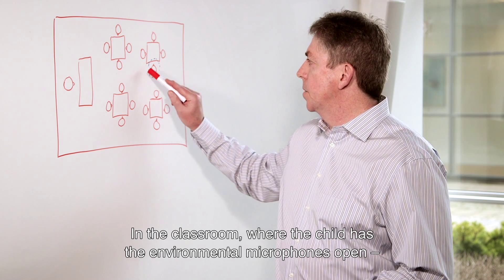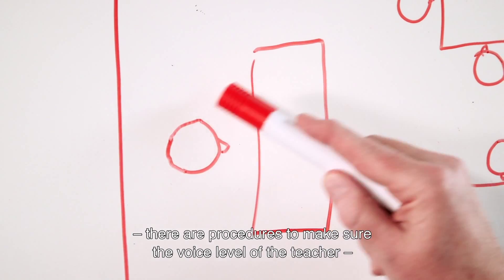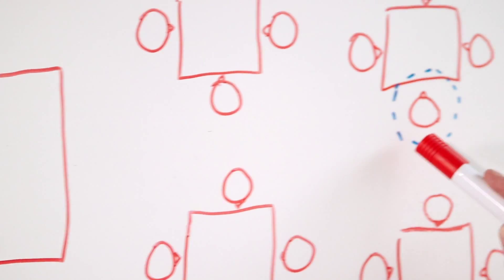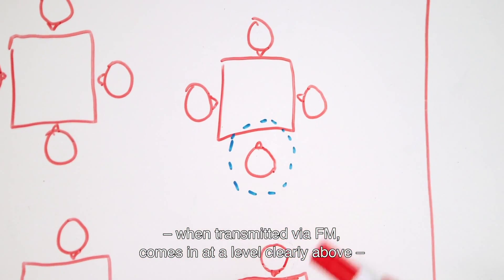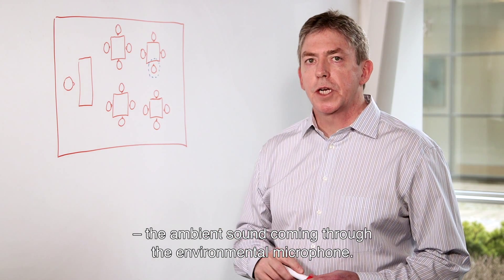In the classroom environment where the child has the environmental microphones of the hearing aid open, there are procedures in place to make sure that the voice level of the teacher, when transmitted via FM, comes in at a level that is clearly above the ambient sound coming in through the environmental microphones of the child.